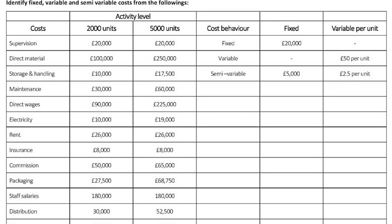This is an exercise on the high-low method. We have a table showing different types of costs — supervision, direct material, storage and handling — at two activity levels: two thousand units and five thousand units. We need to determine the cost behavior for each: whether it's fixed or variable, how much is fixed, and the variable cost per unit. Looking at supervision cost: at two thousand units we pay twenty thousand pounds, and at five thousand units we also pay twenty thousand pounds.